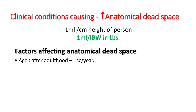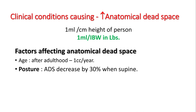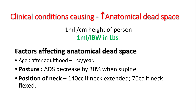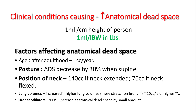Anatomical dead space is about 1 ml per ideal body weight in pounds, so if you are 150 pounds, your anatomical dead space is around 150 cc. It increases with age at around 1 cc per year. Anatomical dead space decreases by 30 percent when lying supine — it is around 140 cc with neck extended and 70 cc with neck flexed. It also depends on lung volumes, increasing with higher lung volumes, bronchodilators, and use of PEEP.